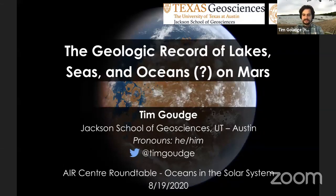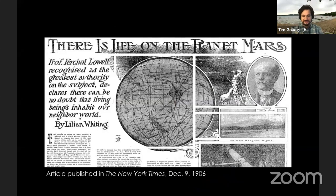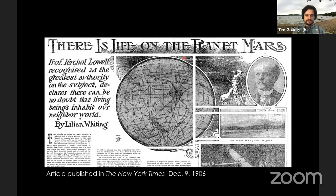This is one of my favorite historic articles, published in the New York Times in the early 1900s. The headline reads: 'There is life on the planet Mars.' This article goes on to talk about Percival Lowell, an astronomer who was very fascinated by Mars, and in particular the idea of canals on Mars that he thought were from civilizations. So Percival Lowell was convinced that there must be life on Mars.